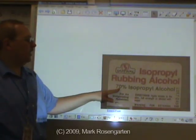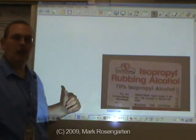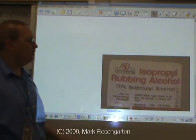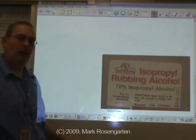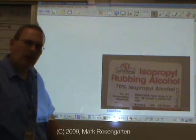In a 70 percent isopropyl alcohol solution, also known as rubbing alcohol, that means that 70 percent of the volume is isopropyl alcohol and the other 30 percent is distilled water.